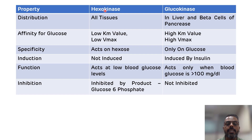Hexokinase, as the name suggests, will act on hexoses — that is glucose, fructose, and mannose. While glucokinase will specifically act only on glucose.